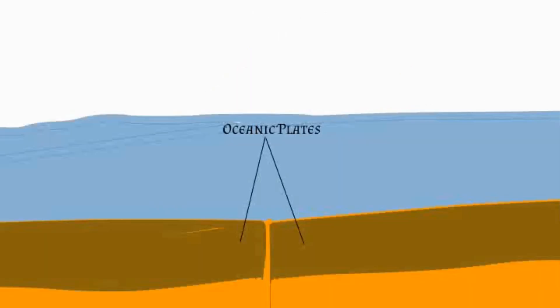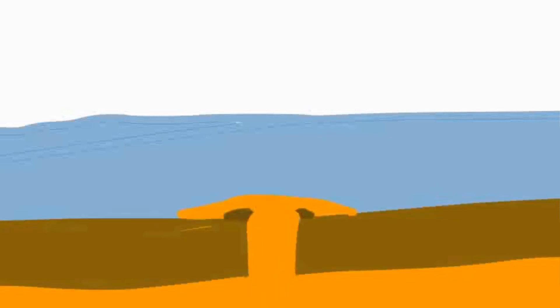Another type of volcano is a shield volcano. This happens when two oceanic plates move apart. They move apart and allow magma to flow through the gap and build up to create a shield shape.